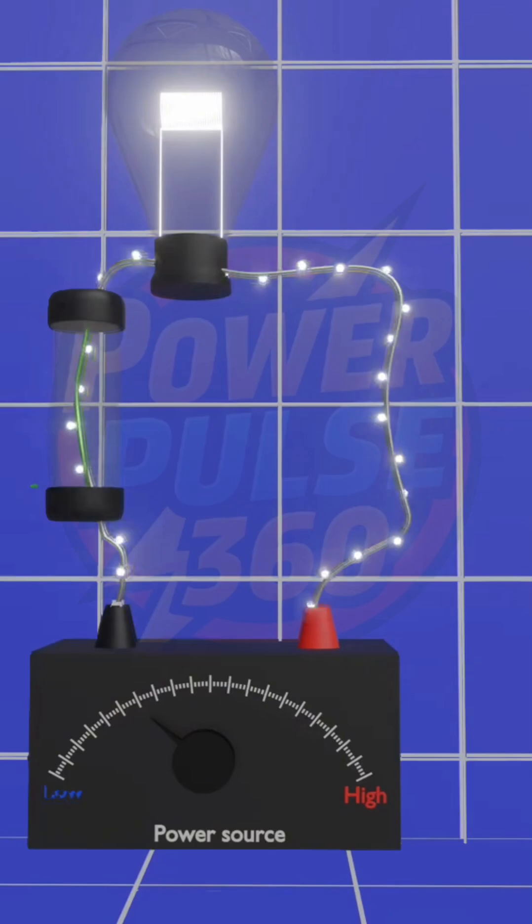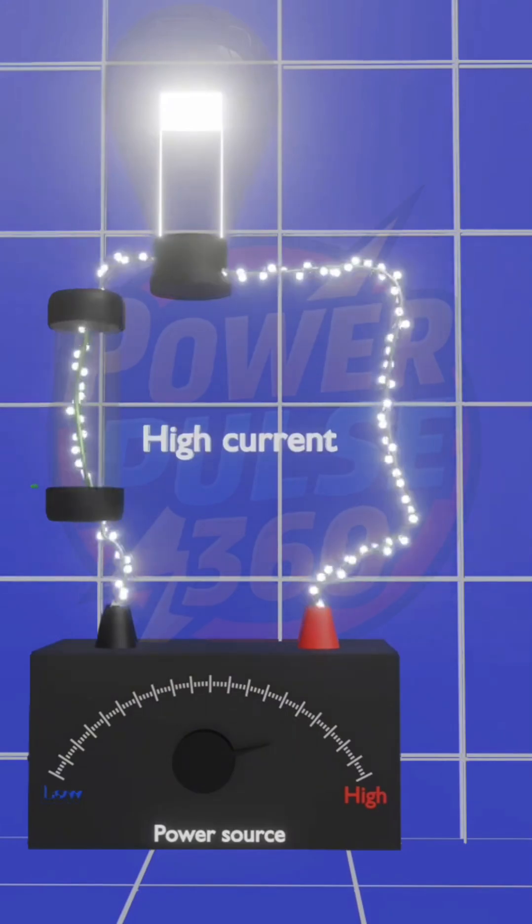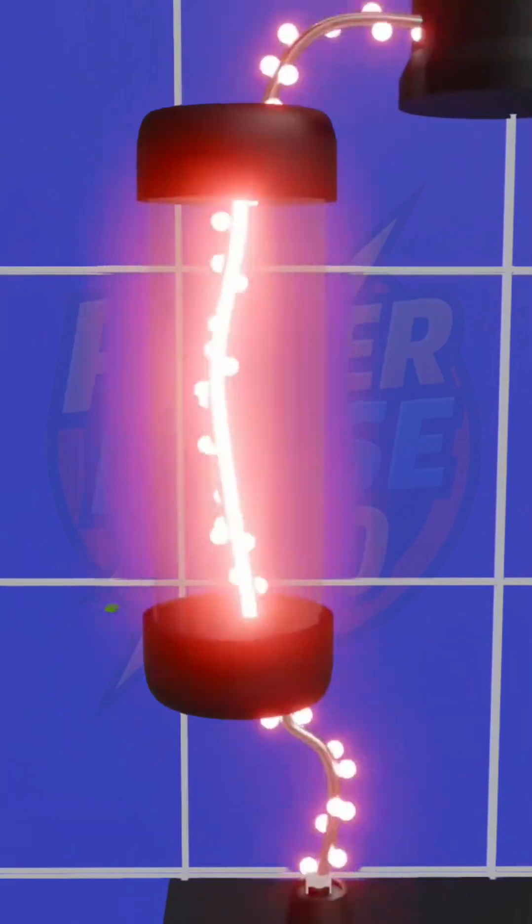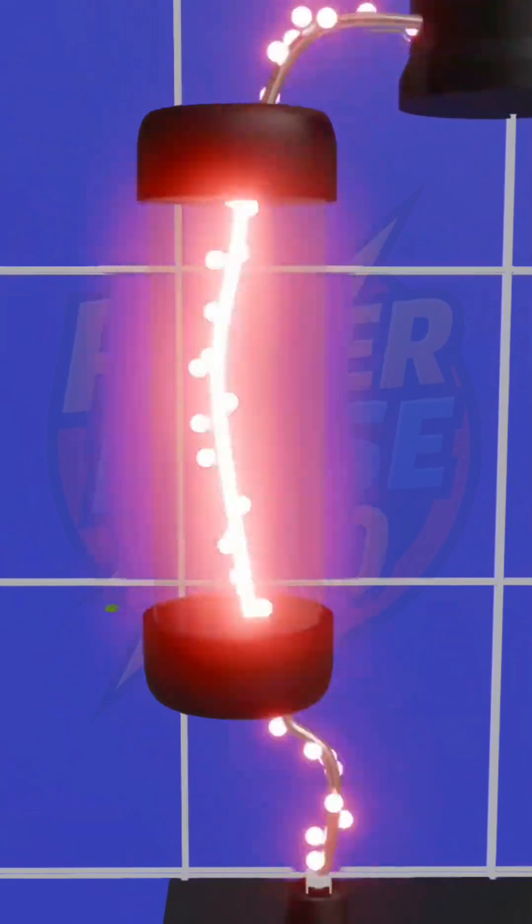Under normal conditions, electricity flows smoothly through the fuse, keeping your devices running safely. But what happens when too much current flows due to an overload or a short circuit? The excess current heats up the fuse wire, causing it to glow red-hot.